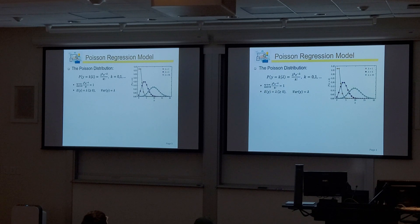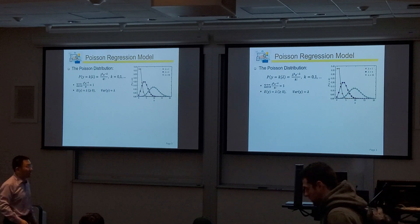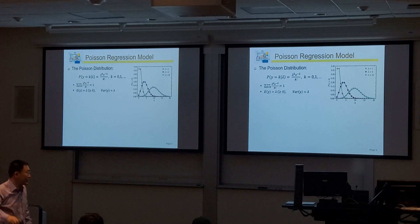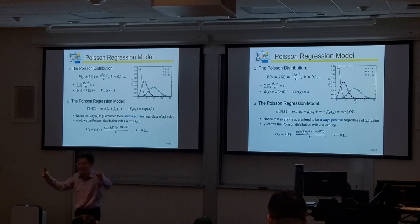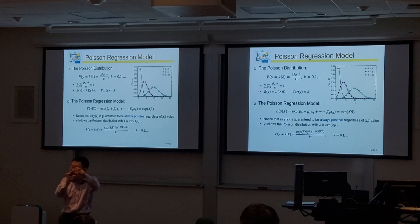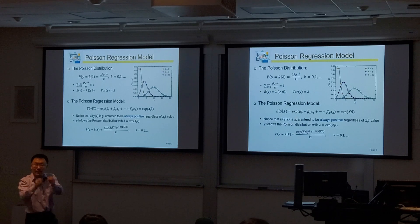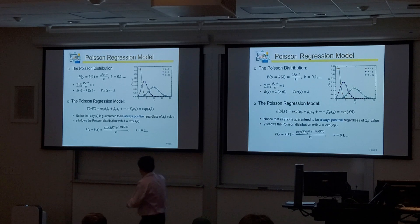Lambda determines both the expected value and the variance of the count variable — that's the key parameter. In the Poisson regression model, we incorporate all x variables by setting lambda equal to a function of those x variables. Since lambda must be non-negative, we set lambda equal to the exponential of the linear combination of x and beta coefficients, ensuring the value is always positive.